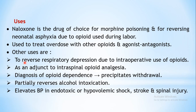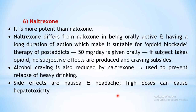Additional uses of naloxone include diagnosis of opioid dependence - when injected in those dependent on opioids, it will precipitate withdrawal syndrome, helping to determine if a person is addicted. It can also reverse alcohol intoxication. Furthermore, it elevates blood pressure in endotoxic or hypovolemic shock, stroke, or spinal injury.